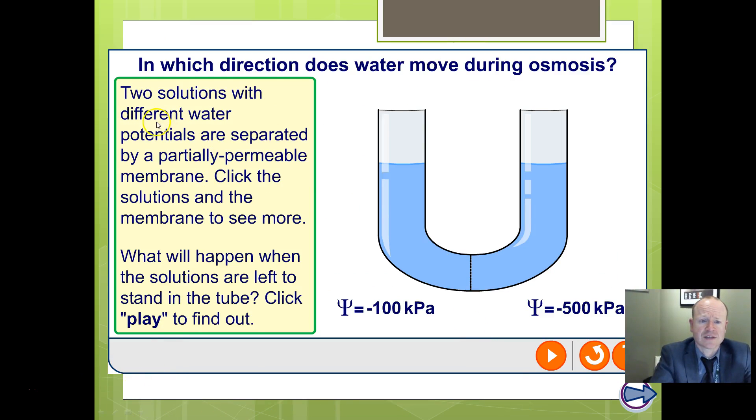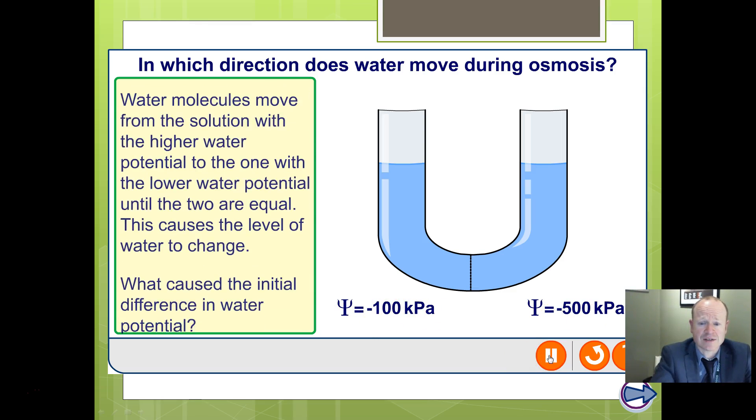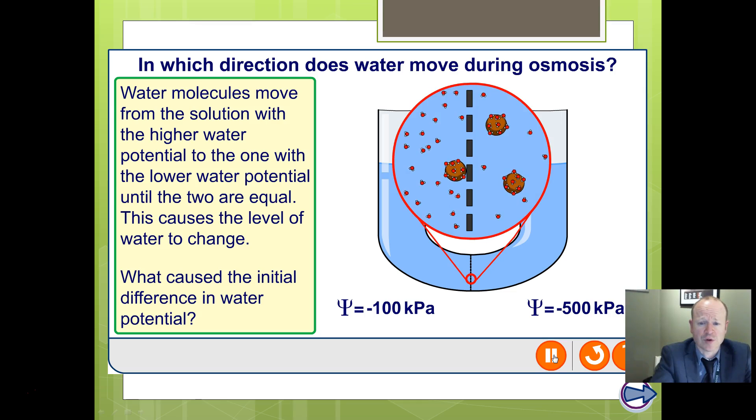Let's just reset that. So here we've got two different water potentials. This one is more negative, this one is less negative. So if we leave it for any length of time, we reach a balance point where water molecules start to move until you end up with both at an equal sort of water potential.